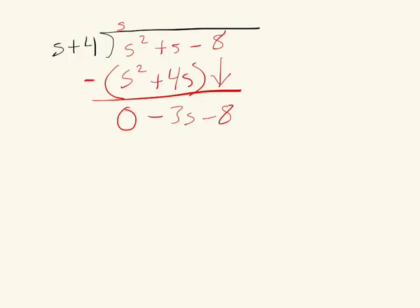Negative 3 times s is negative 3s, negative 3 times 4 is going to be negative 12. Put it in parentheses and subtract. So negative 3s plus 3s, once I distribute that negative, is going to be zero.